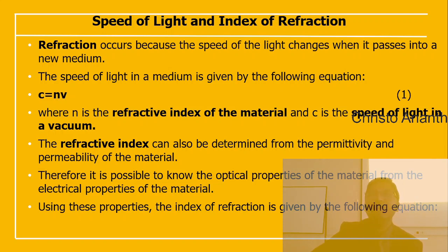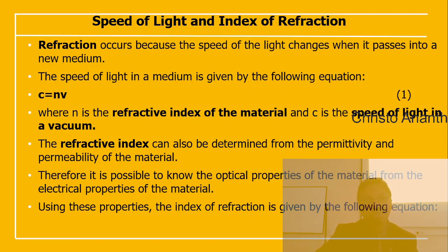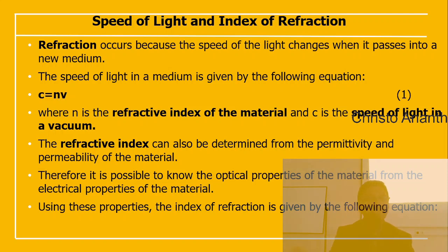The speed of light can be expressed as C = N × V, where N is the refractive index of the material and C is the velocity of light, 3 × 10⁸ m/s. The refractive index can be determined from the permittivity and permeability of the material, linking the electrical properties to the optical properties.